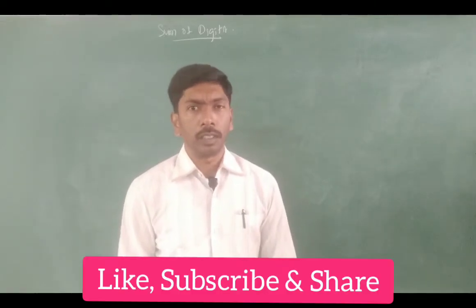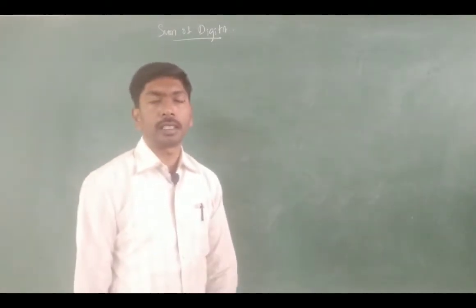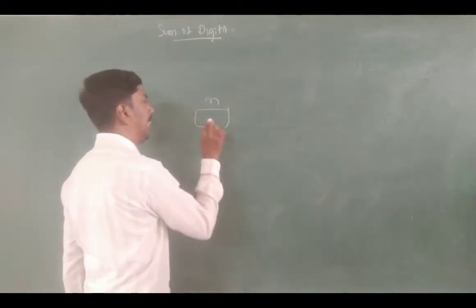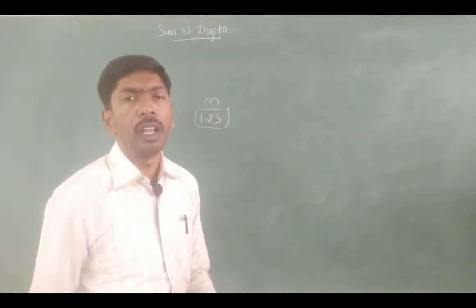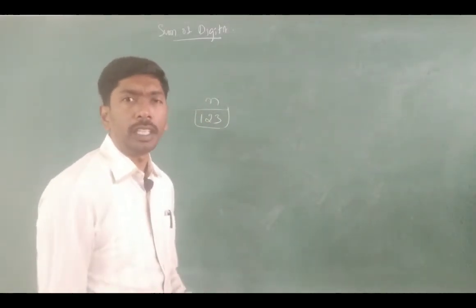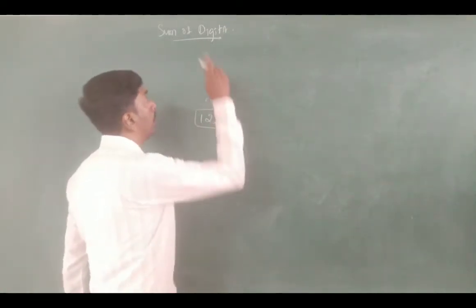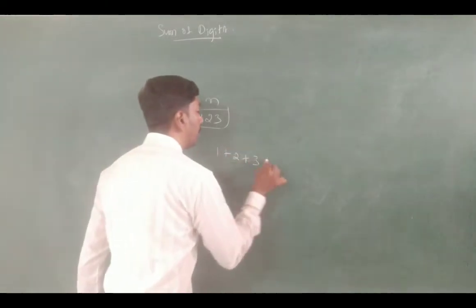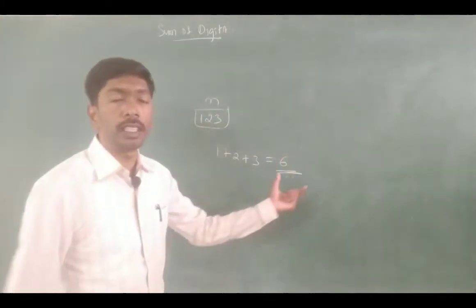In looping, a very important program is the concept of sum of digits. The next program using a while loop is called sum of digits. What is the sum of digits? We have to accept a number — for example, 123, 457, or 349. If we accept 123, we add the individual digits: 1 plus 2 plus 3, and the answer is 6. The sum of digits is 6.